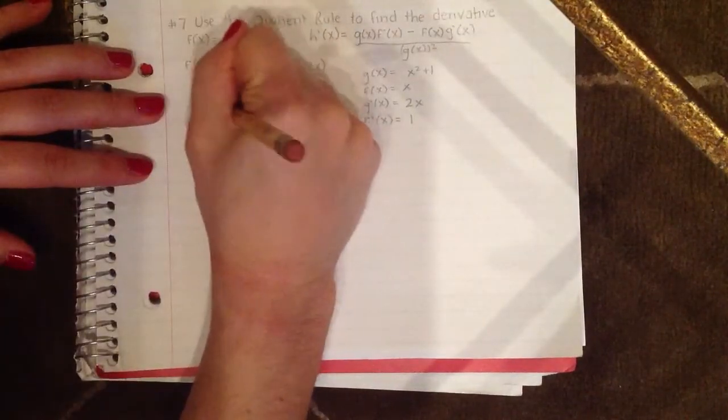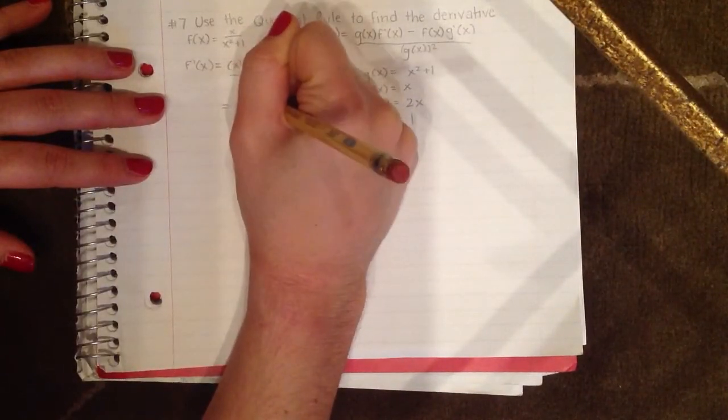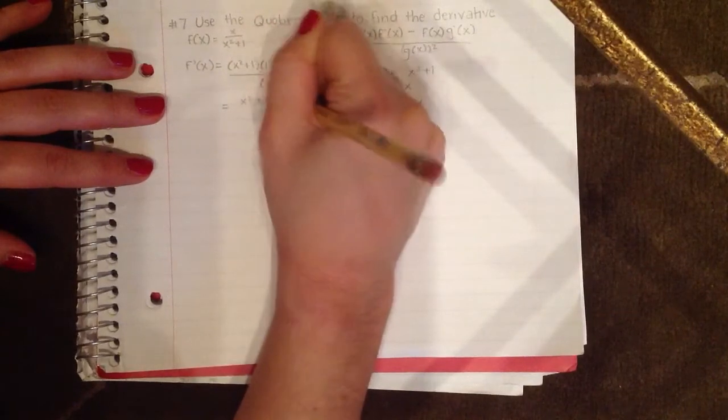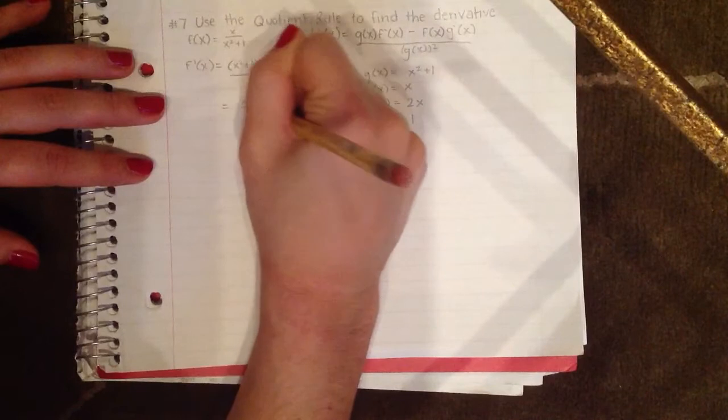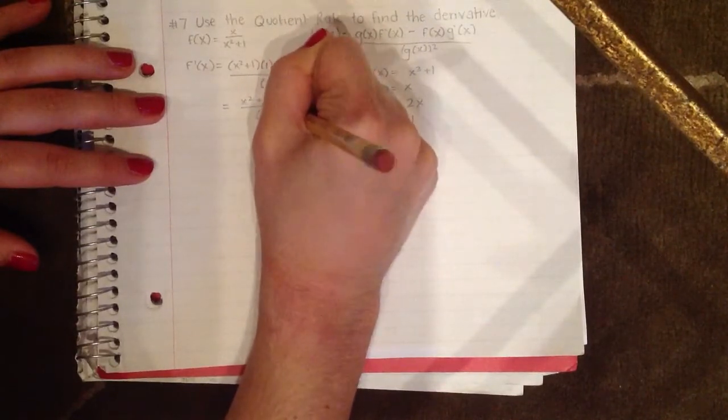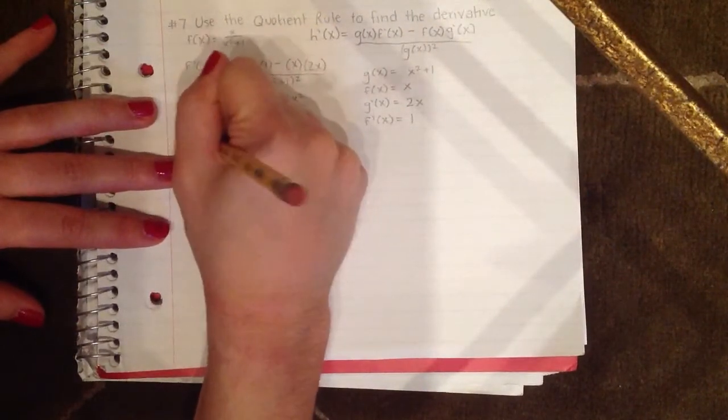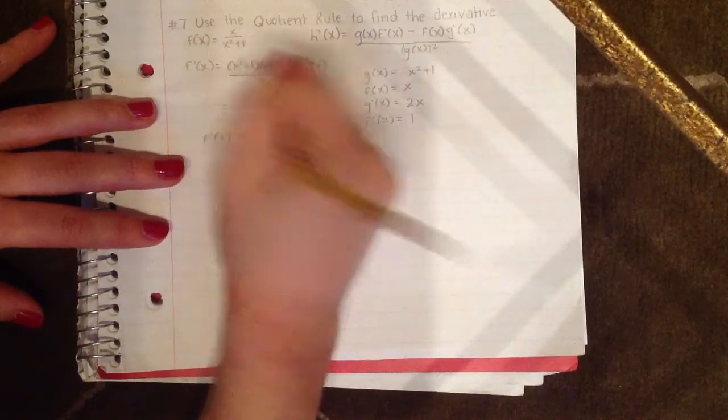So now I'm going to simplify, and I'll be left with x² + 1 - 2x² all over (x² + 1)². And now I'm going to combine my like terms.